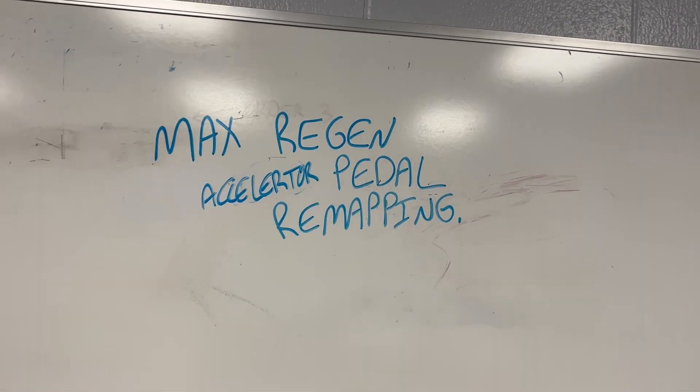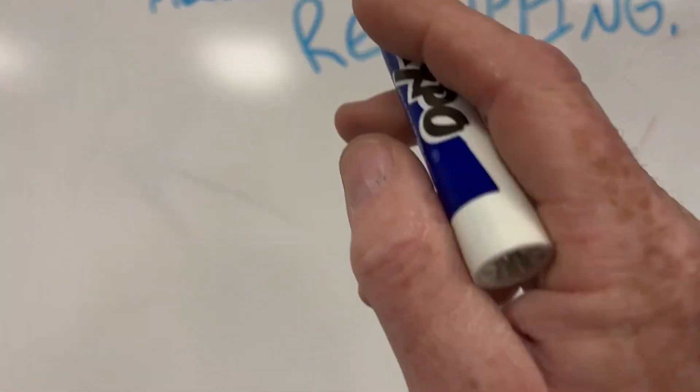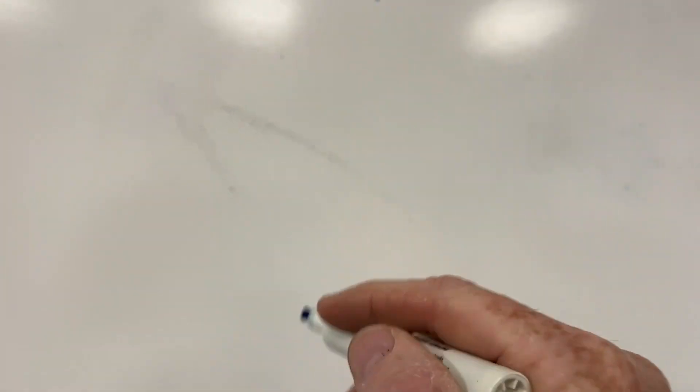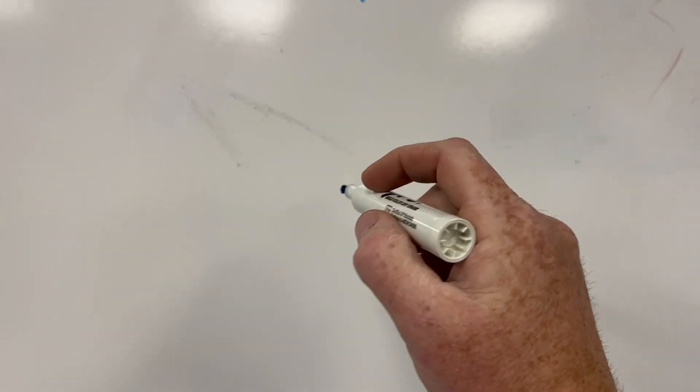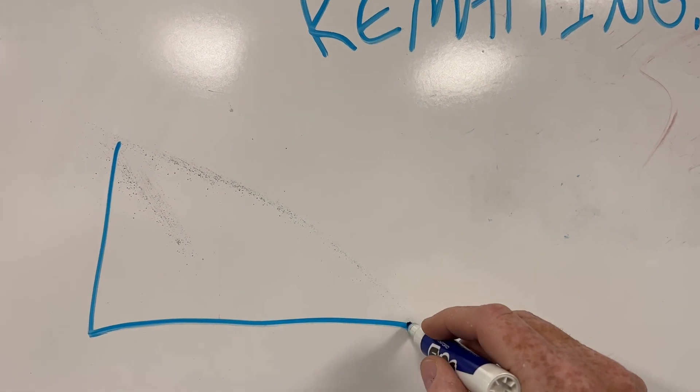If you aren't familiar with this, this is something good to know because a lot of people feel like max regen is very jerky, and that's only if you lift your foot all the way off the accelerator pedal. So the way to think about this: if this is the accelerator pedal and this is the zero point where it is at its absolute all the way highest point...